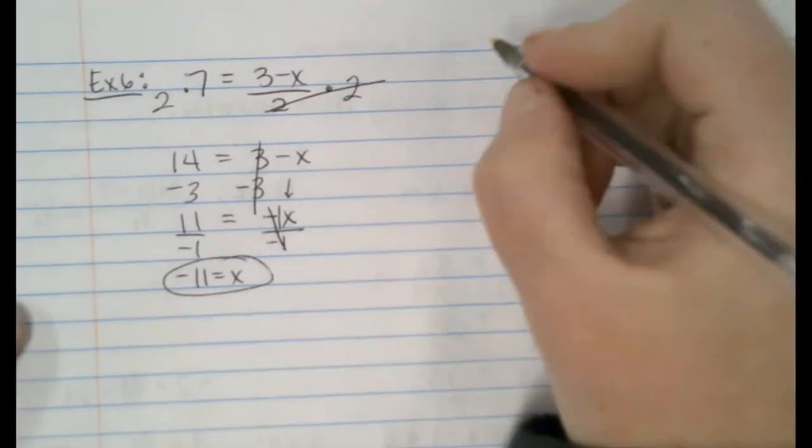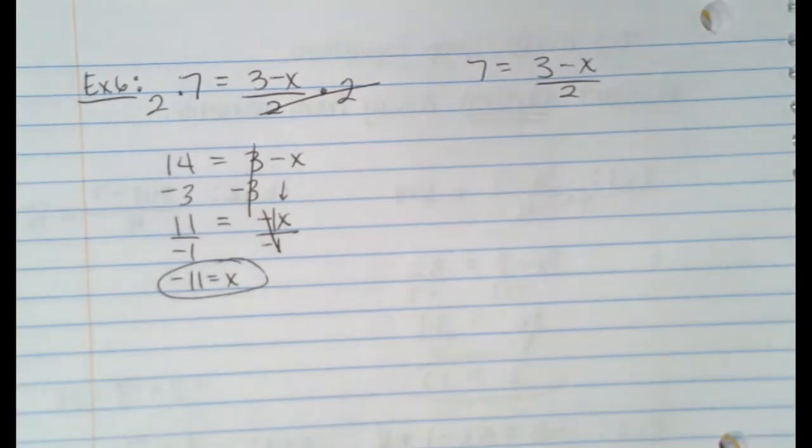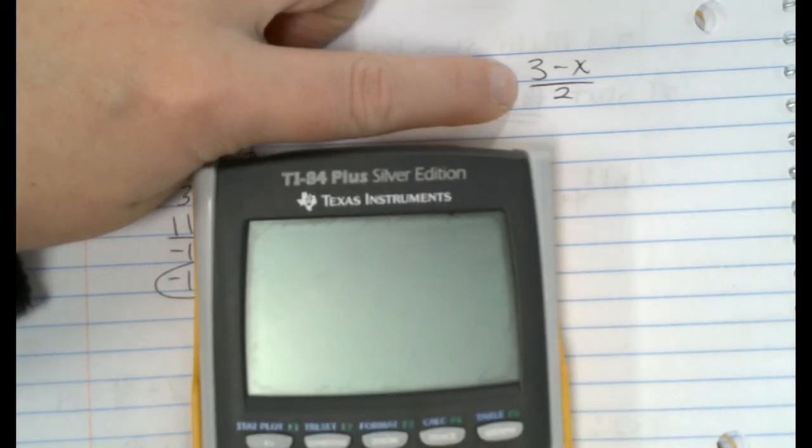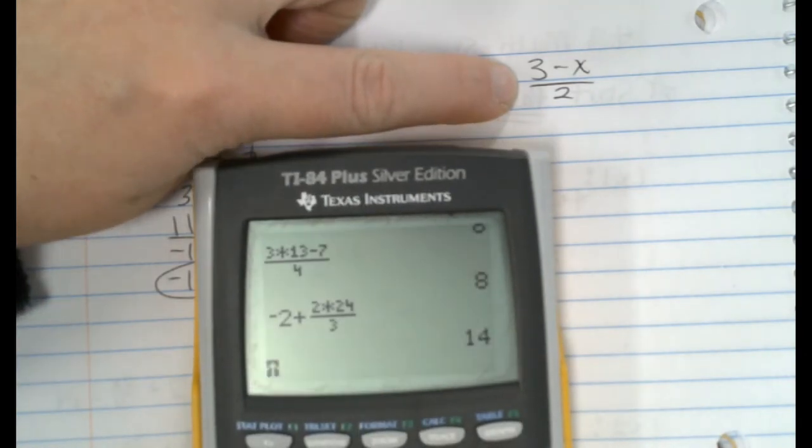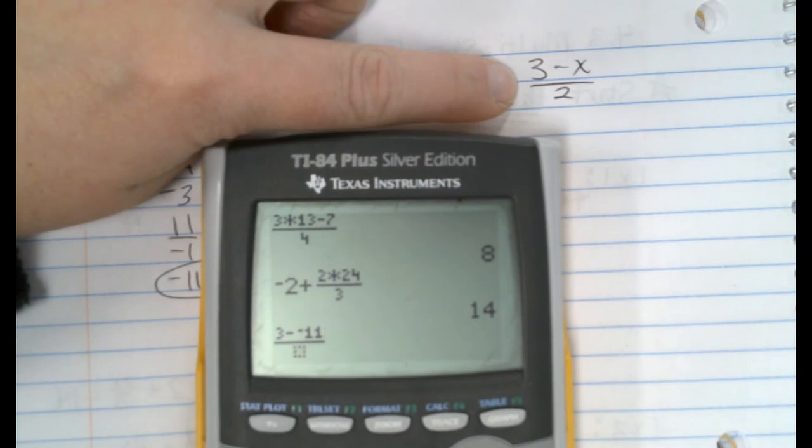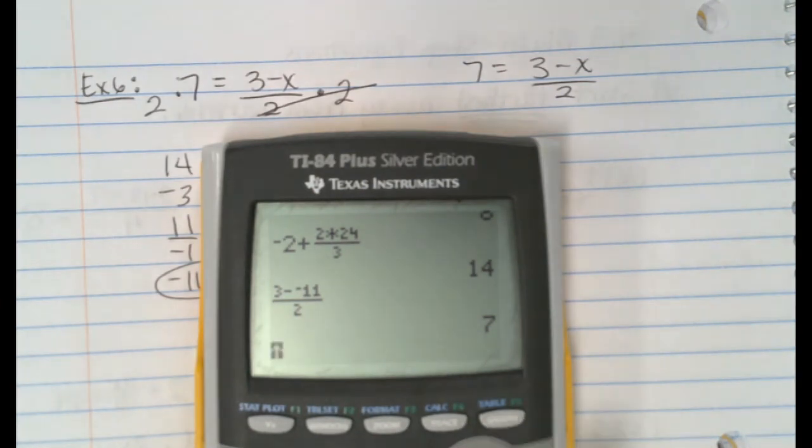Let me show you, just real quickly, because this is a weird one to type in the calculator. Let me show you how you type this in. I'm going to type in, first of all, I'm going to do a fraction. 3 minus negative 11 was what we got, over 2, equals 7. Which is what we were supposed to get.